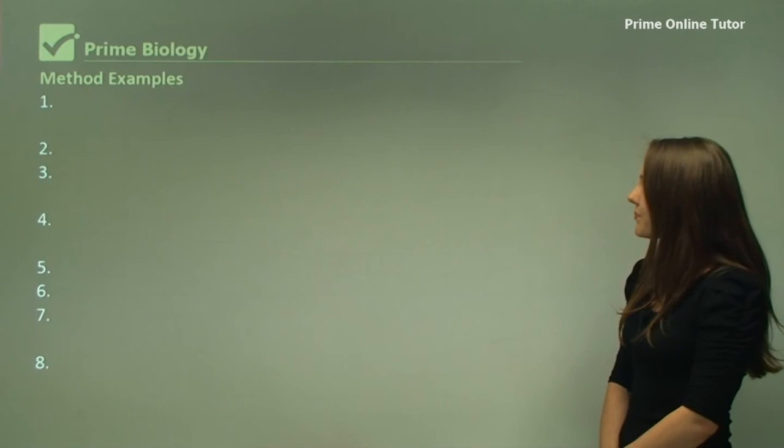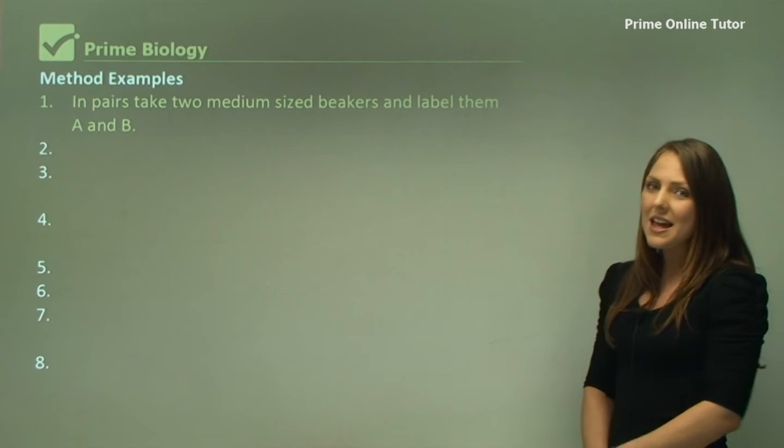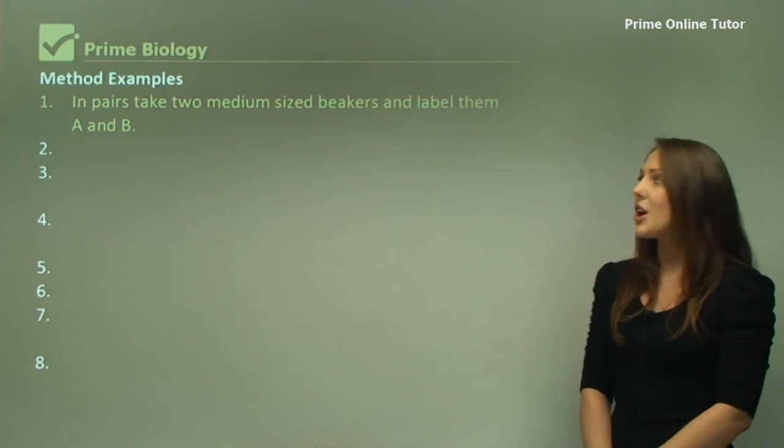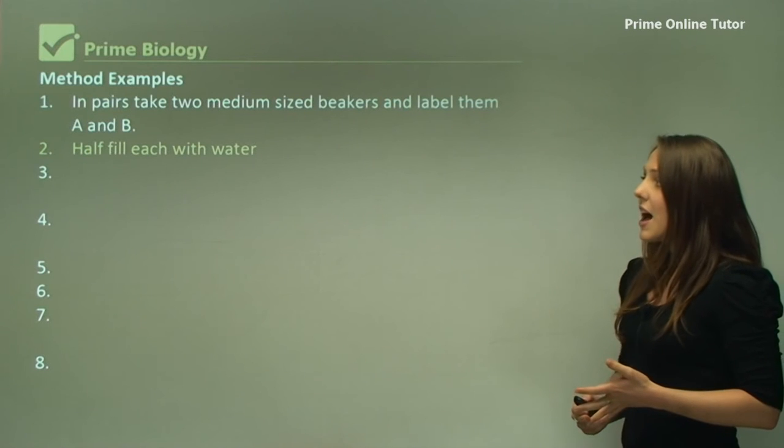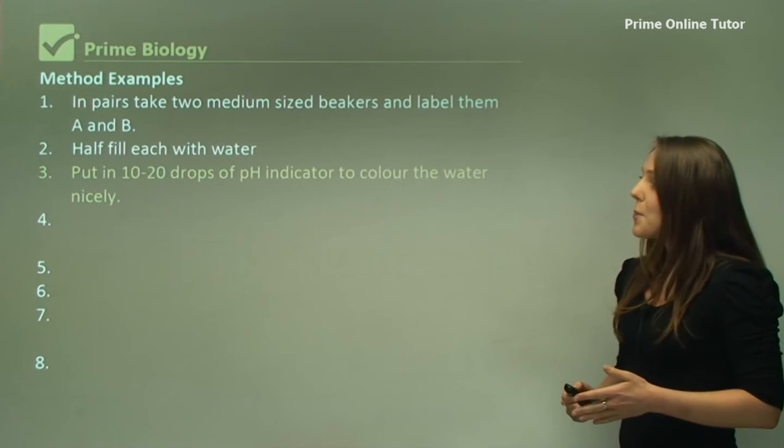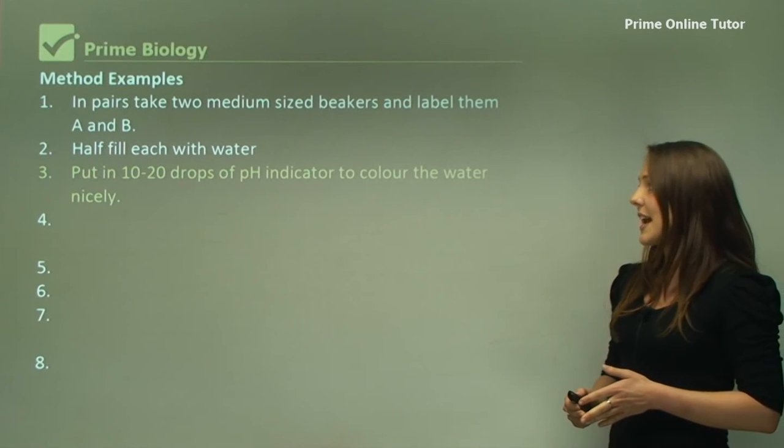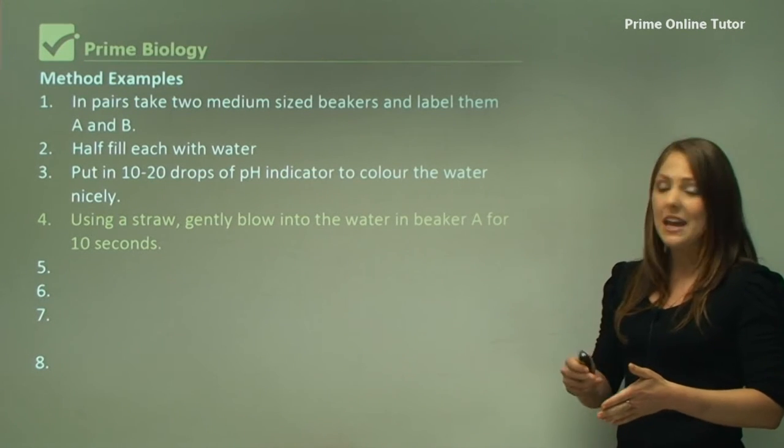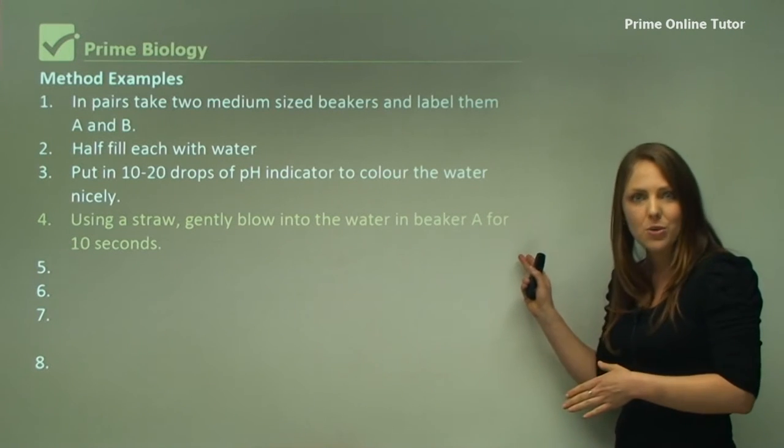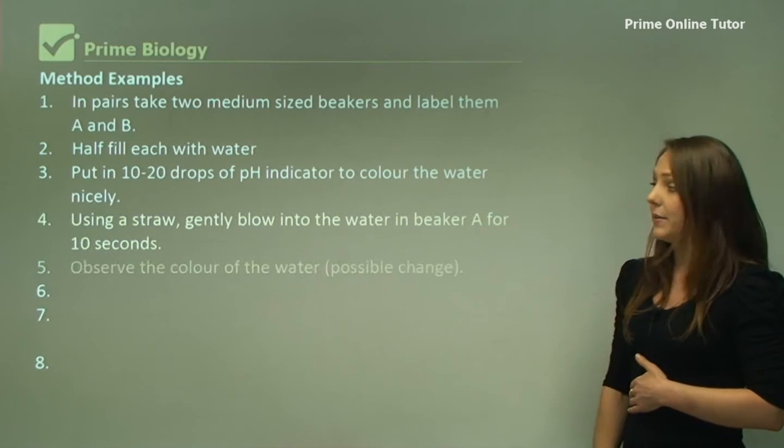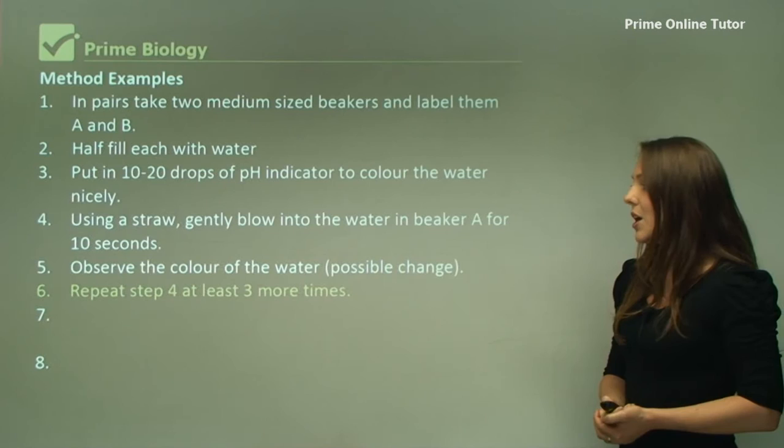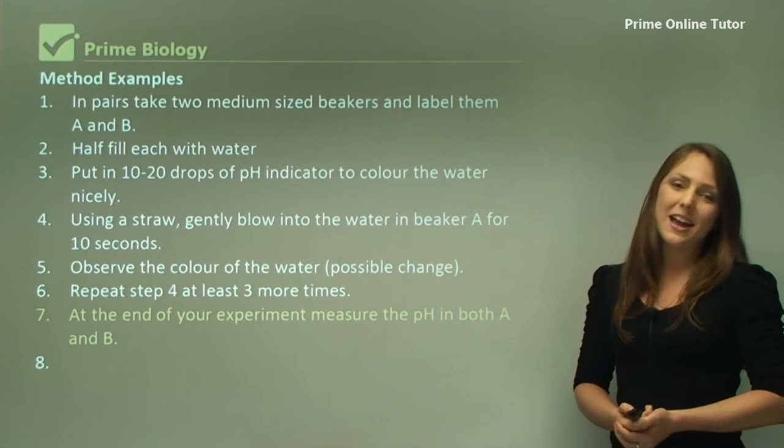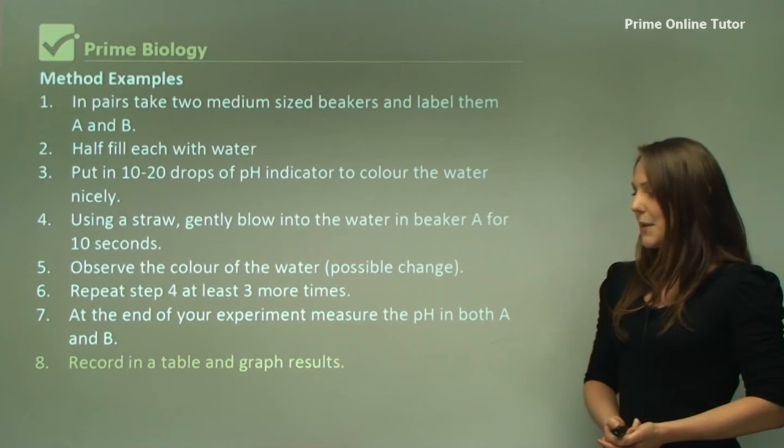An example of a method for the pH of exhaled breath in water: 1) In pairs take two medium-sized beakers and label them A and B. 2) Half fill each with water. 3) Put in 10 to 20 drops of pH indicator to color the water nicely. 4) Using a straw, gently blow into the water in beaker B for 10 seconds. 5) Observe the color of the water. 6) Repeat step four at least three more times. 7) At the end of your experiment, measure the pH in both beakers. 8) Record in a table and graph the results.